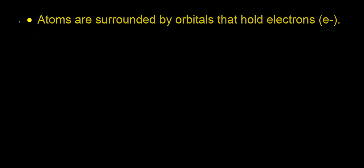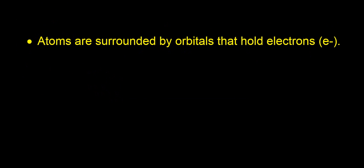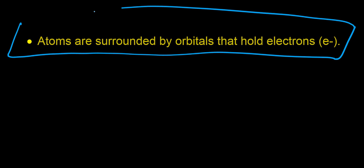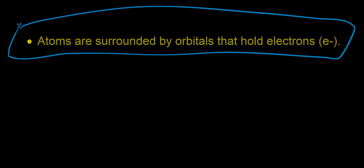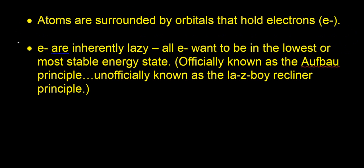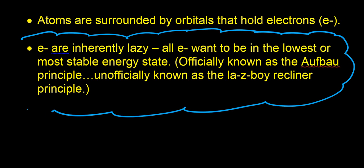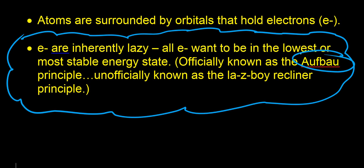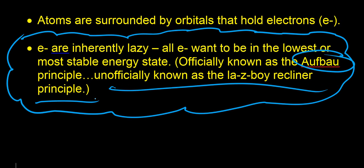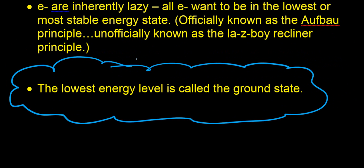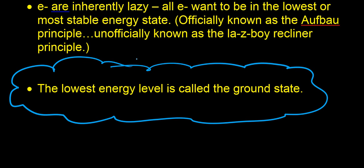Building on what we addressed yesterday, we have the idea that atoms are surrounded by orbitals. Orbitals are where we're going to find our electrons. Our next point is that electrons are inherently lazy — electrons want to be in the lowest or most stable energy state. This is known as the Aufbau principle, or unofficially the lazy boy recliner principle. The lowest energy state for our atoms is known as the ground state, kind of like the ground floor in a building — it's the lowest position an electron can find itself in.